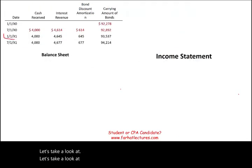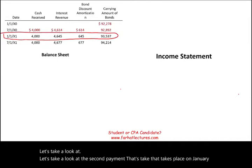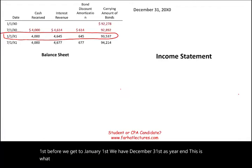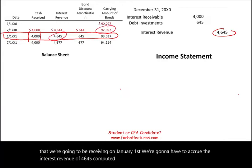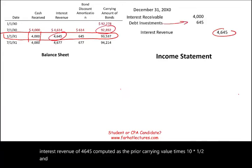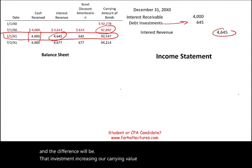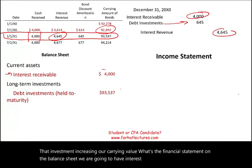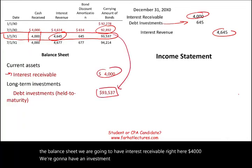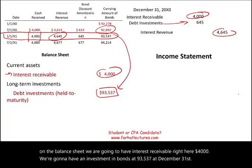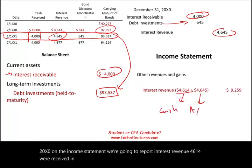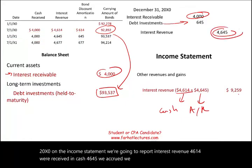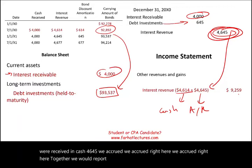Before we get to January 1st, we have December 31st as year end. By year end, we accrue the $4,000 we will receive on January 1st. We accrue interest revenue of $4,645, computed as the prior carrying value times 10% times one-half, and the difference increases the debt investment carrying value. On the balance sheet, we report interest receivable of $4,000 and investment in bonds at $93,537 at December 31st, 20X0. On the income statement, interest revenue totals $9,259 — $4,614 received in cash plus $4,645 accrued.